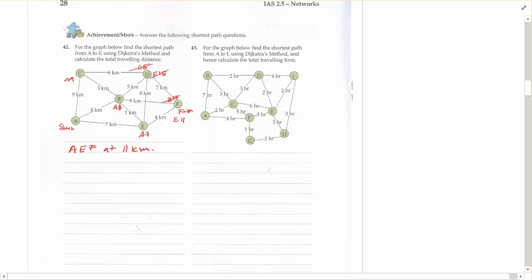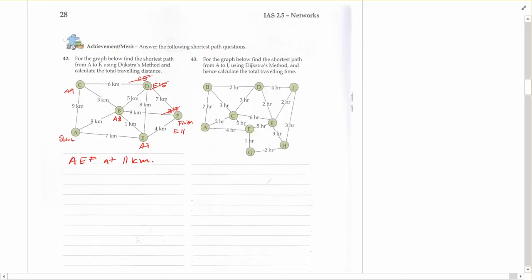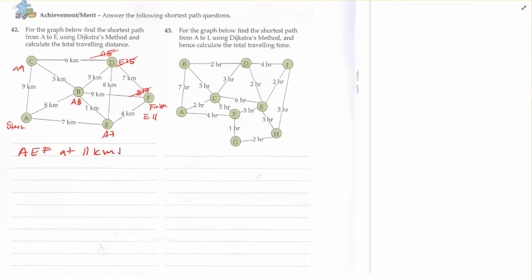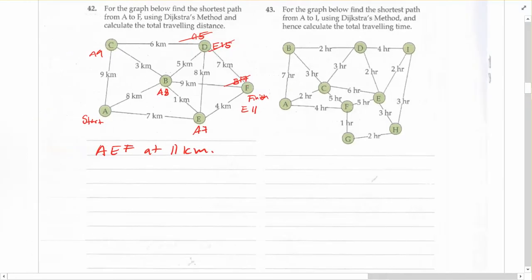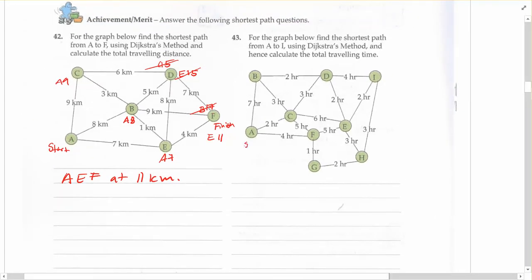We'll take a look at one more example, if you would like. I can recommend you try it on your own first, but see how you go. So for the graph below, find the shortest path from A to I. So from A is my start, and I is my end.